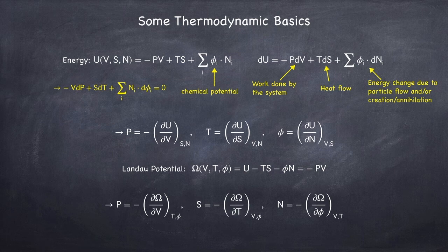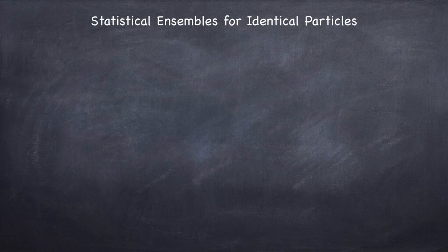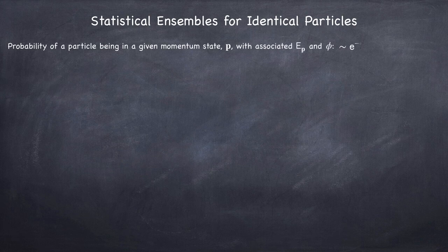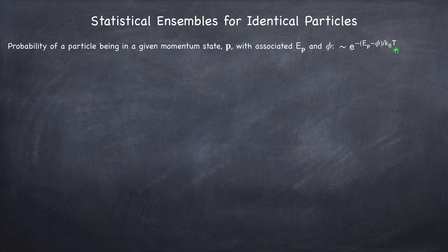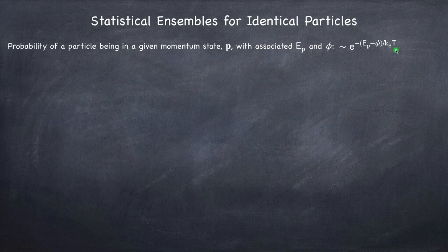Next we have to find what the Landau potential is, so let's take a look at statistical ensembles for identical particles. Particles can be in a given momentum state, and associated to that momentum state is a given energy. For a particle with a given chemical potential, the probability of being in a momentum state p — bold p, a vector — which has an associated energy E_p, is proportional to what's called the Maxwellian weight: e raised to (E_p minus the chemical potential) divided by the temperature. I'm not going to derive this, so we'll take it as a given. This is why it's more useful to use the chemical potential — because it shows up in this probability of a particle being in a given state.